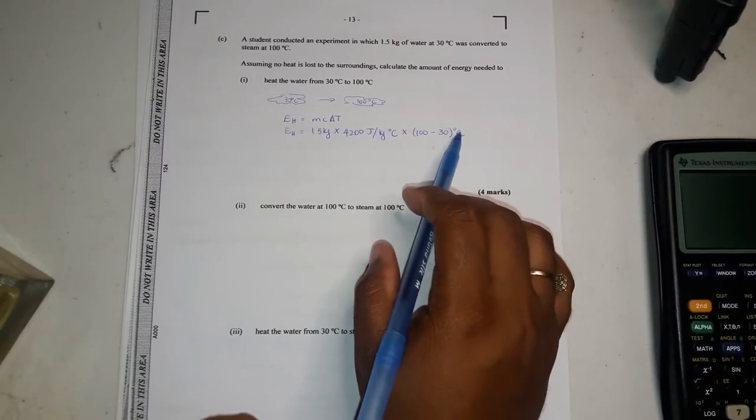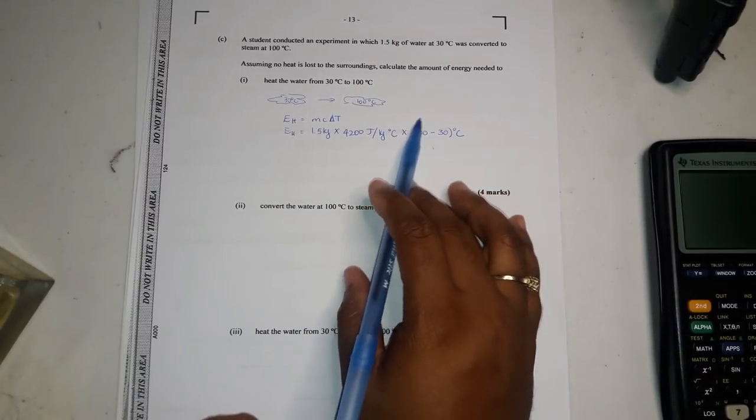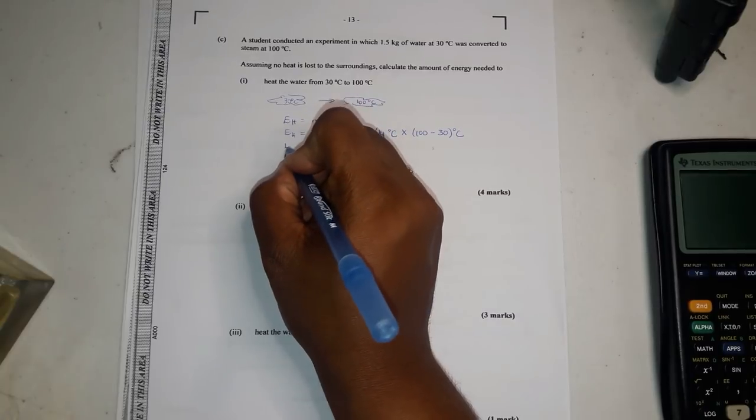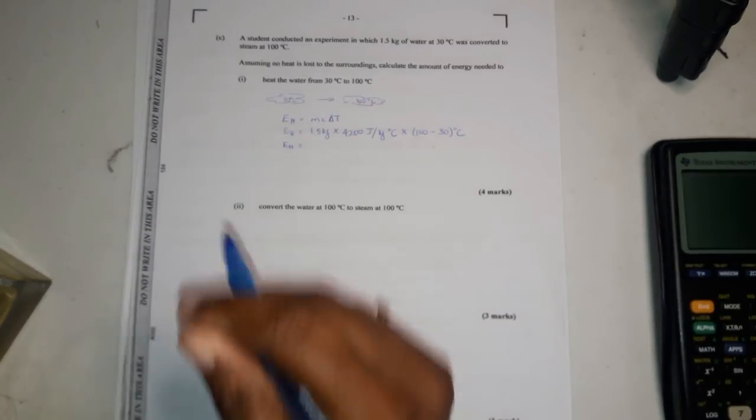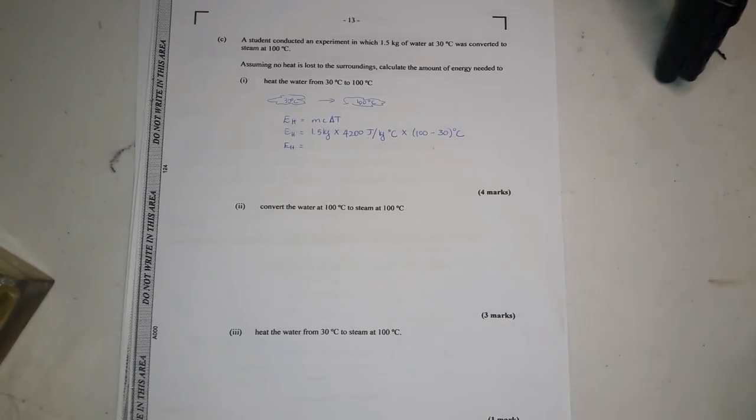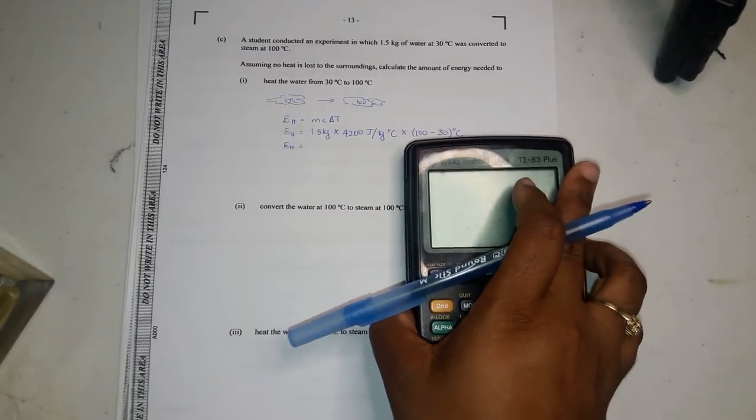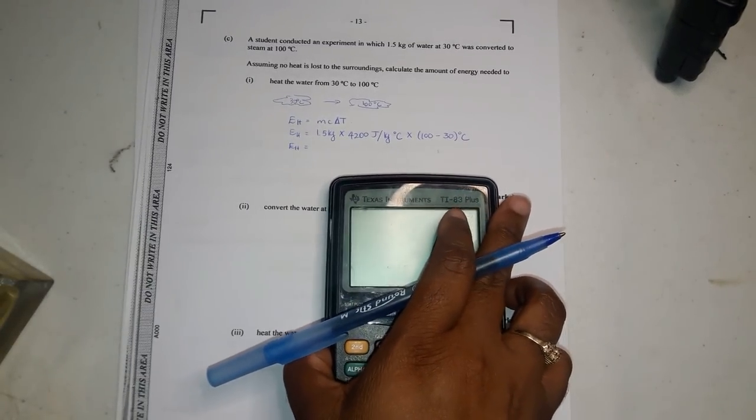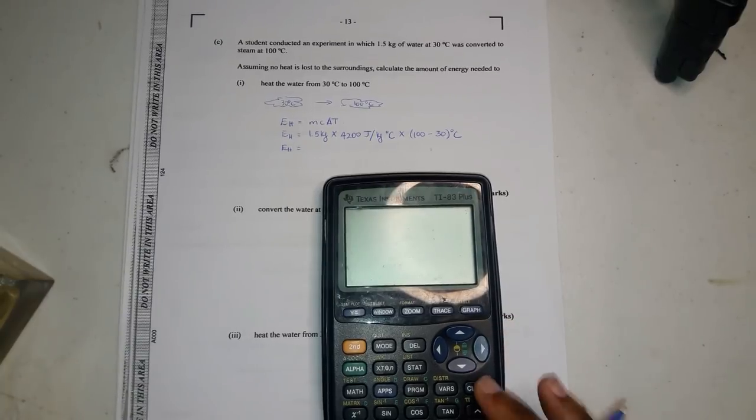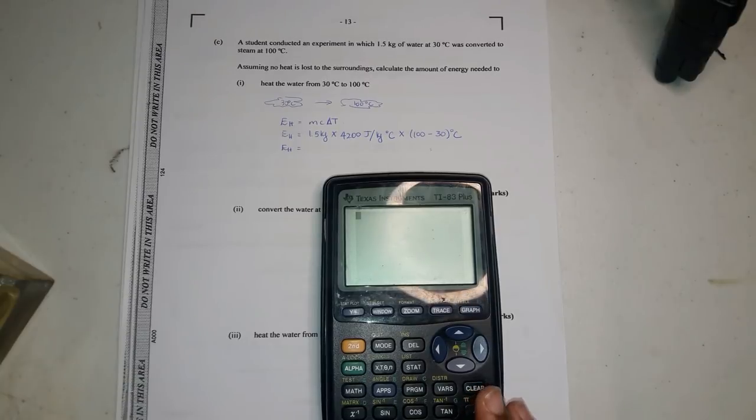You don't convert this to kelvins. You don't need to because they are equal at equal increments on this scale. When you compare them, a Celsius and a Kelvin are equal increments. So you don't have to convert it. You only convert it when you're doing the gas laws PV. When you're doing V over T because V over T, which is Charles law.